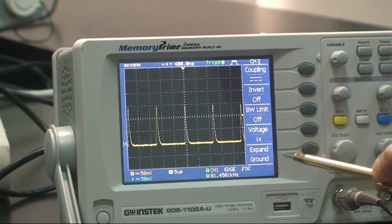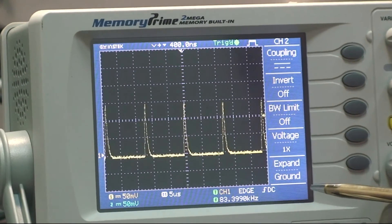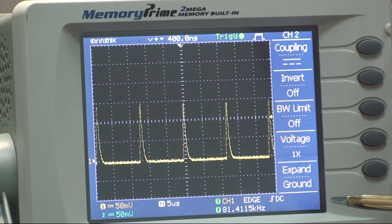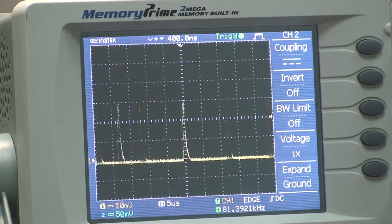The frequency counter of GDS-1000AU shows waveform update rate of over 80,000 waveforms per second. That ends the demonstration. Thank you.